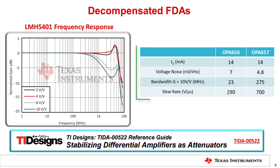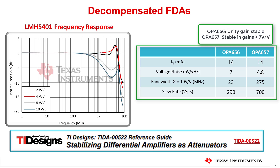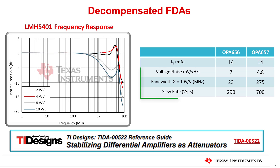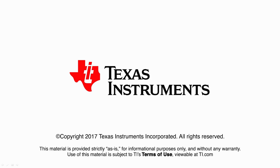For example, the OPA656 and OPA657 are both built on the same process and share the same core design. However, the OPA656 is unity gain stable, while the OPA657 is stable in gains of 7 or higher. Notice that while both amplifiers consume the same quiescent current, the OPA657 has superior bandwidth, noise, and slew rate performance compared to the OPA656. This concludes the loop gain and stability analysis of the FDA. Please take the quiz to test your knowledge.